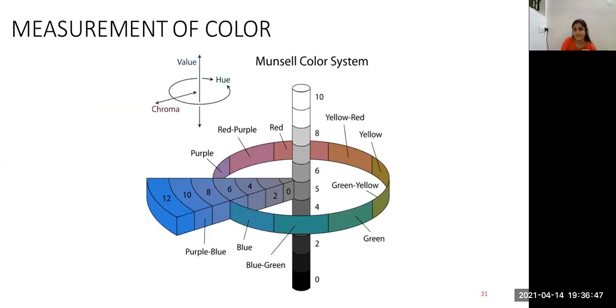The measurement of color is given by Munsell. Here, in this color system, the hue is represented along the perimeter of the cylinder, chroma along the radius of the cylinder and value along the length of the cylinder. White is at the top of the cylinder, black at the bottom and shades of gray in the middle.